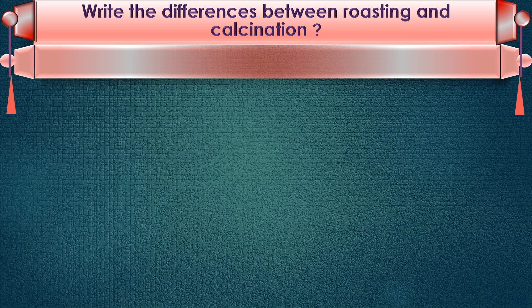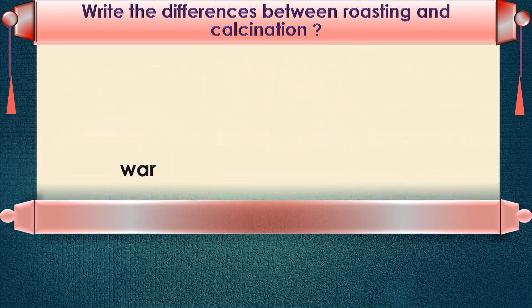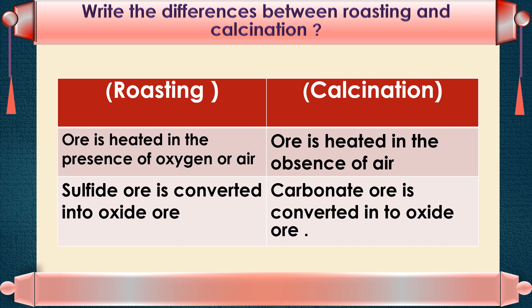Write the differences between roasting and calcination. In roasting, the ore is heated in the presence of oxygen or air, and sulphide ore is converted into oxide ore. In calcination, the ore is heated in the absence of air, and carbonate ore is converted into oxide ore.